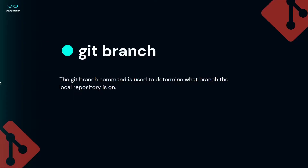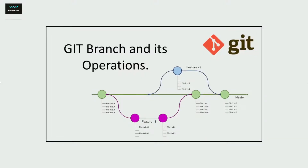Next up is the git branch command. As discussed, we can work on different branches at the same time, and git branch tells you which branch Git is currently pointing to. For example, the green line is the master branch. If I am working on feature 1 and my teammate is working on feature 2, once I confirm my feature is working, I can merge my branch to the master branch. Same for feature 2.